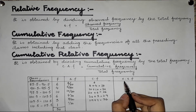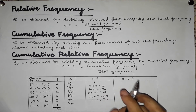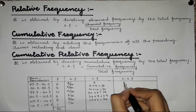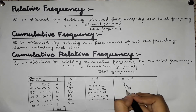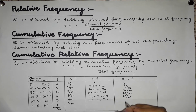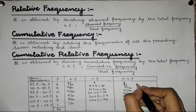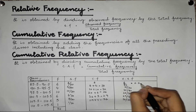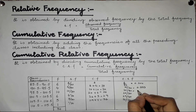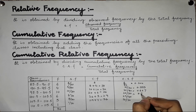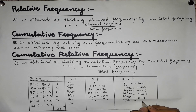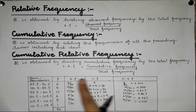Now we find the cumulative relative frequency. The formula is cumulative frequency divided by total frequency. So: 6 over 30, 10 over 30, 20 over 30, 26 over 30, 29 over 30, and 30 over 30. The decimal answers are: 0.200, 0.333, 0.667, 0.867, 0.967, and 1.000.